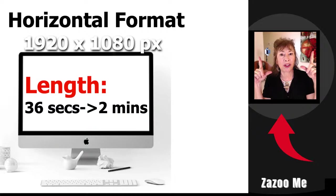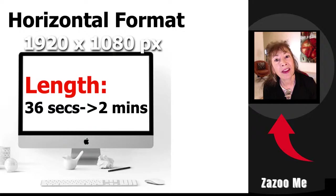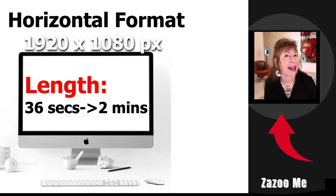You want the length of your trailer to be somewhere between 36 seconds — which is what YouTube considers a view — and two minutes. You never want to go under 36 seconds; it's just not worth it if you want to get watch time.